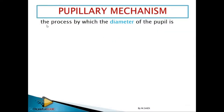When you talk about pupillary mechanism, it's the process by which the diameter of the pupil is being changed. Students tend to misunderstand the pupillary mechanism and accommodation. In accommodation, you have to talk about the lens, the suspensory ligament, and the ciliary muscles. While in pupillary mechanism, you talk about the muscles in the iris and also the pupil.